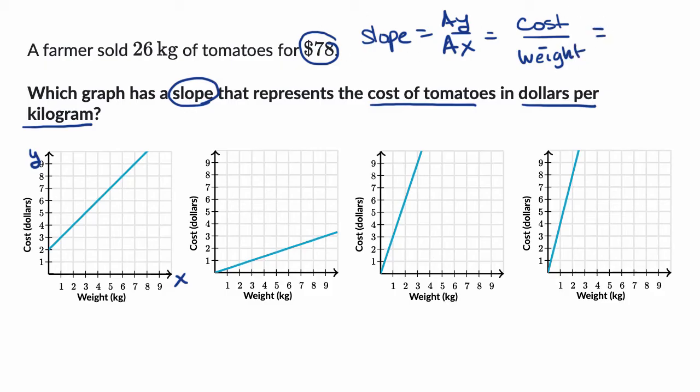And they give us that. It's going to be $78 for every 26 kilograms. They sold 26 kilograms and it sold for $78. So for 26 kilograms. And we can see that our units are right. It's in dollars per kilogram.